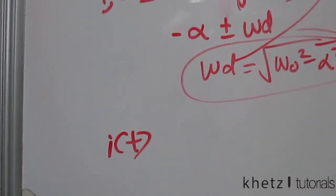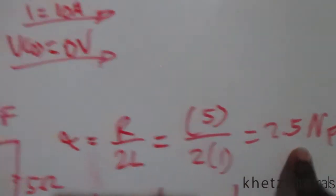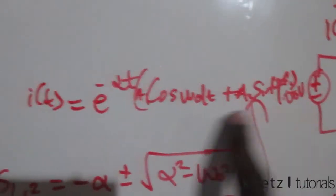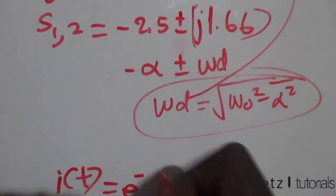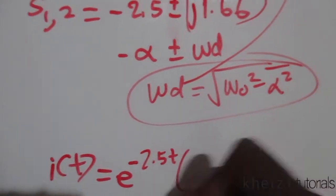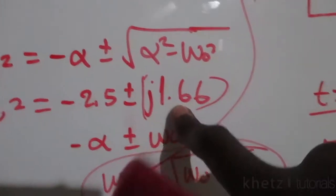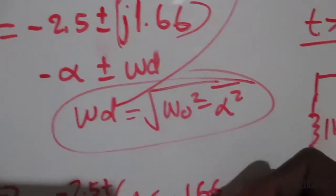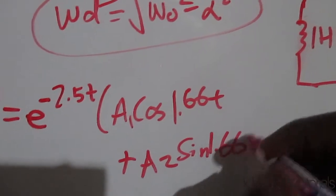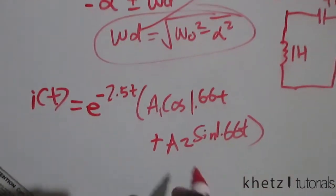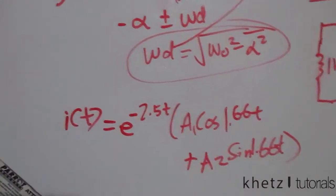We are now ready to write the general formula for i(t). Substituting α = 2.5 and ω_d = 1.66, the underdamped response is: i(t) = e^(−2.5t) [A₁ cos(1.66t) + A₂ sin(1.66t)] amperes. We still need to find the coefficients A₁ and A₂ using the initial conditions.